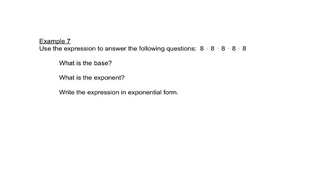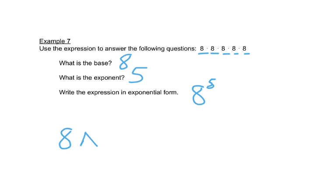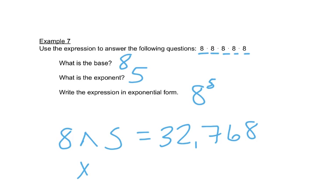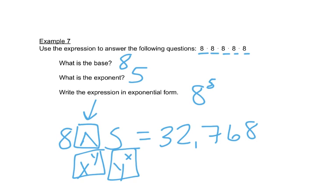Here's another example. The base is the number being repeated, which is 8, and it appears 5 times, so the exponent is 5 — written as 8 to the 5th power. To find the answer, type 8 times 8 times 8 times 8 times 8, or use the up arrow button on your calculator and type 8 up-arrow 5 to get 32,768. Your calculator may also have an x-to-the-y or y-to-the-x button, but the up arrow is most common.